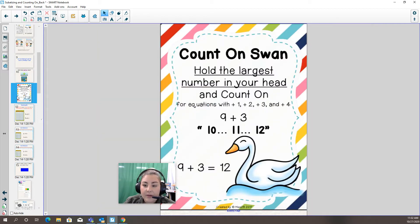Today we're learning about count on swan. Count on swan tells us to put the largest number in our head and count on. It's a really good strategy when you have equations with plus one, plus two, plus three, and plus four.